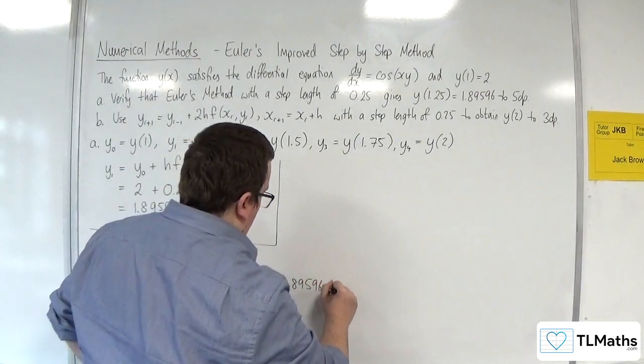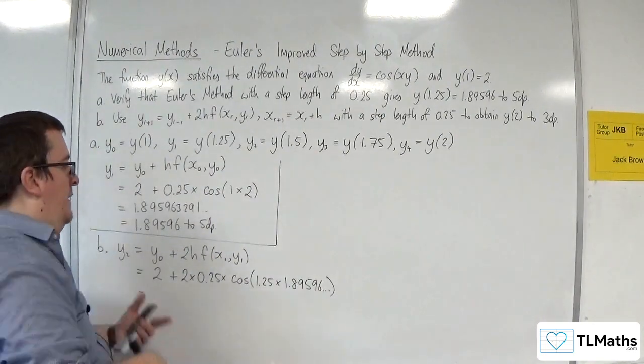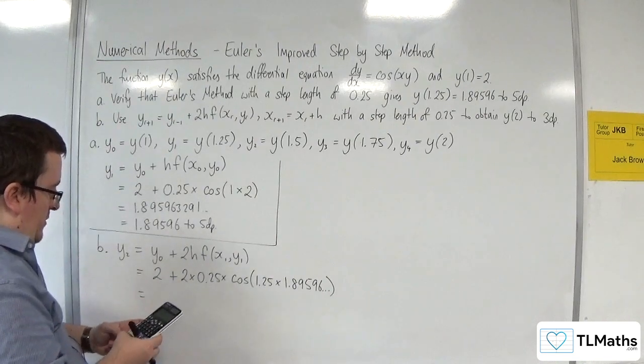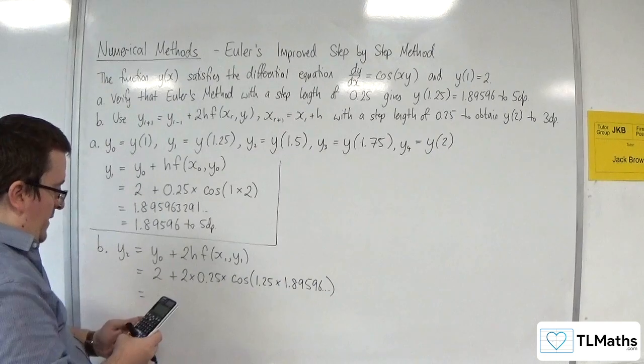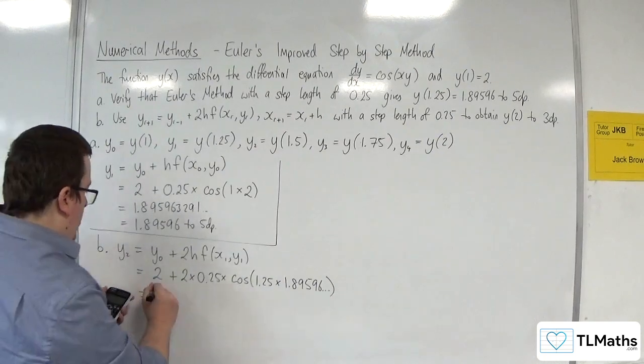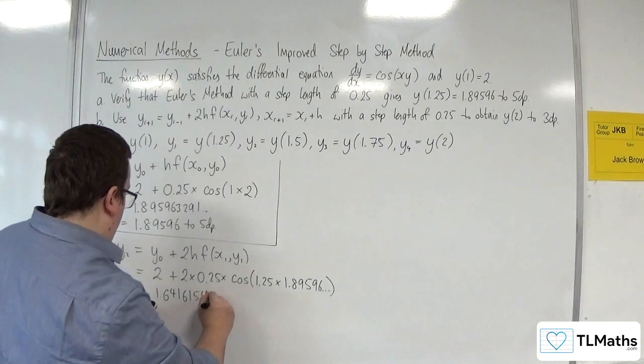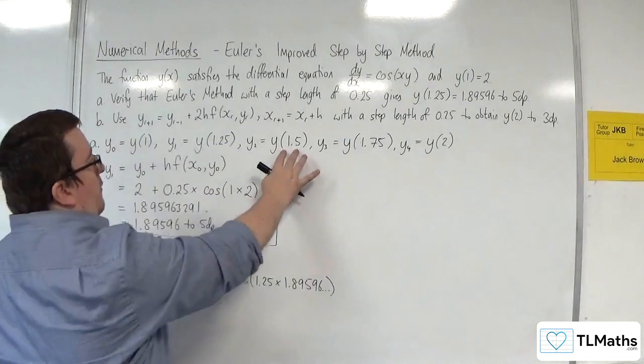Okay, so make sure you've still got it on your calculator, then you can just use the answer key. So 2 plus 2 times 0.25 times cosine of 1.25 times the answer key, and we should get 1.64161547. Okay, so that's my y2, that's y of 1.5.